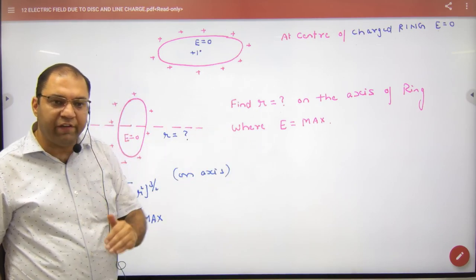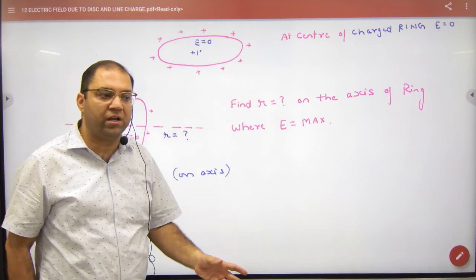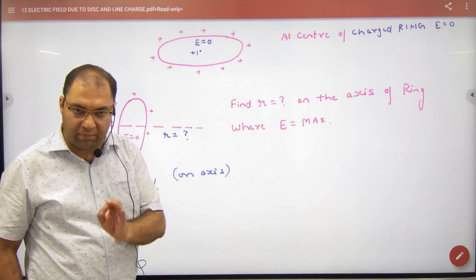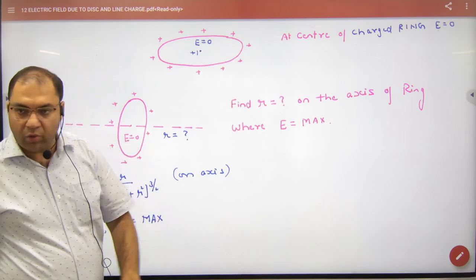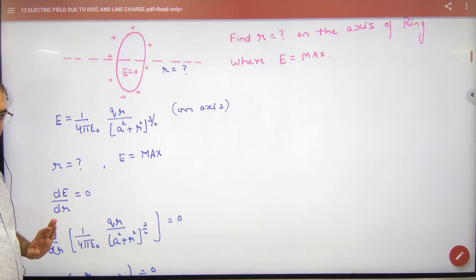So E's value, I want to remove r, I want to remove point, I want to remove distance from center, where E is maximum. This is a question. So E's formula at r distance? What is this? I have written this formula.